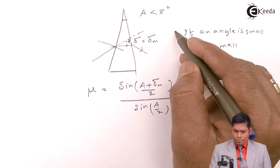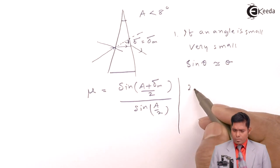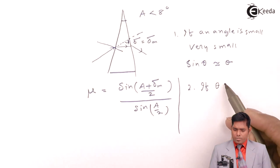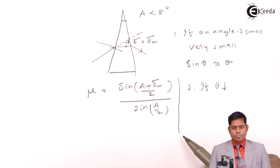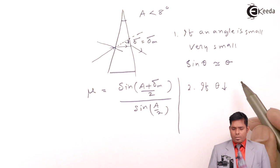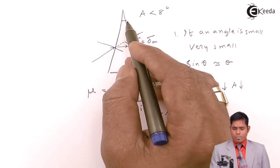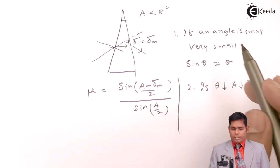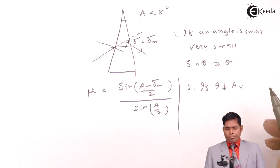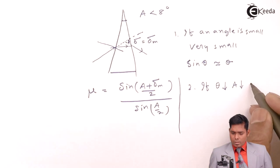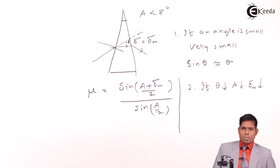If theta is small, that means A is small. For any thin prism A is small, which is nearly 8 degrees or 7 degrees, 5 degrees, 2 degrees. A is small. If A is small, then delta is also very small.